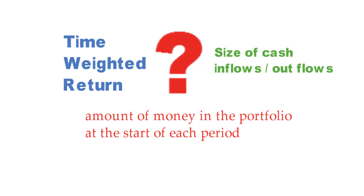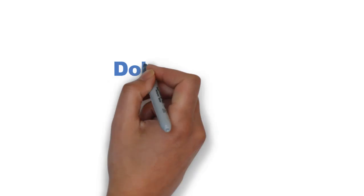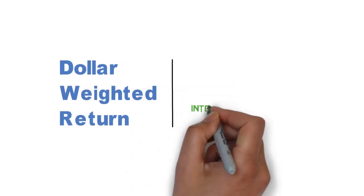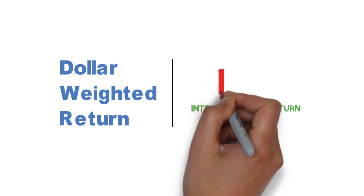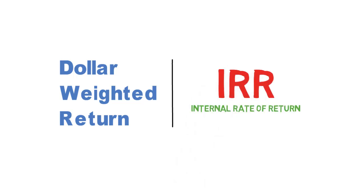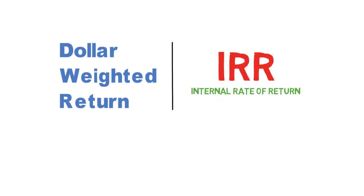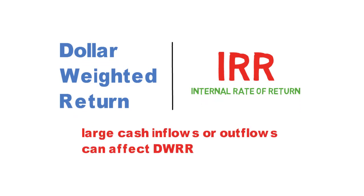On the other hand, dollar-weighted return is the IRR, internal rate of return, which is the discount rate that equals the cost of an investment with the cash generated by that investment. Dollar-weighted return, or DWRR, do reflect cash inflows and outflows, as well as the investment performance of the fund chosen by the investor. Dollar-weighted returns can be heavily changed depending on if and when large cash flows in or out of an investment occur.